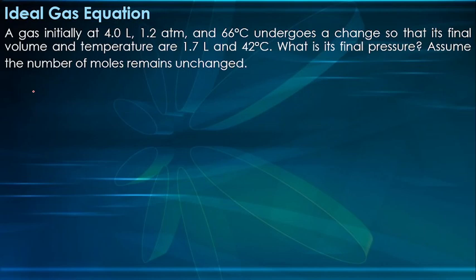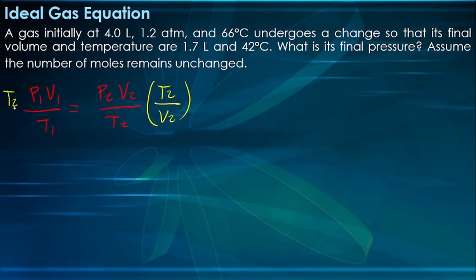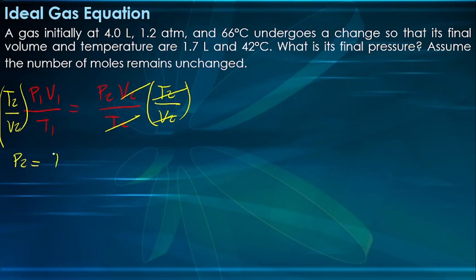Since the number of gas particles does not change, we use the combined gas law: P1V1/T1 equals P2V2/T2. We need to find the final pressure P2. Rearranging by multiplying both sides by T2 over V2, we get P2 equals T2 times P1 times V1, divided by V2 times T1.